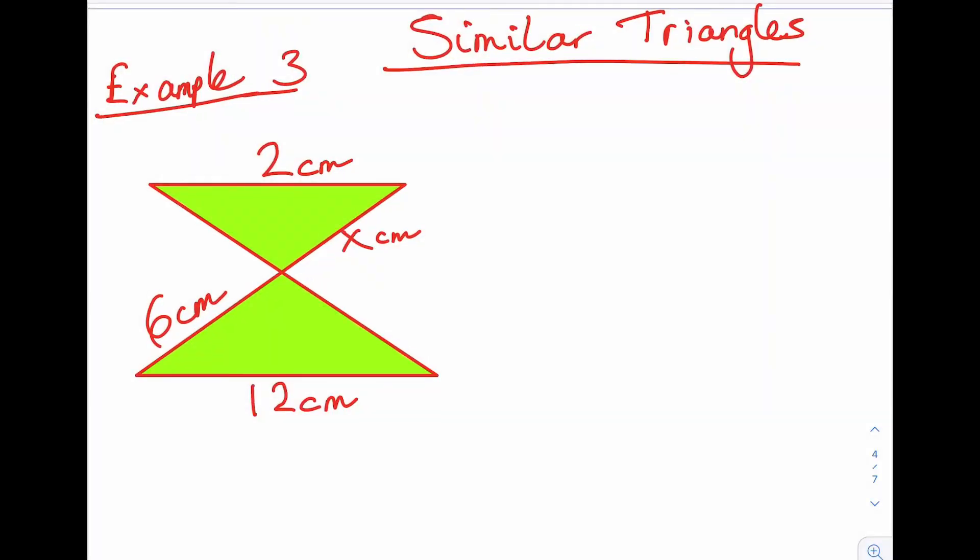Example 3. Similar triangles. Now this is a little bit harder to see. I've been drawing one on top of the other and it's hard to see that these are actually similar. But if we take a cut here and I copy this one.